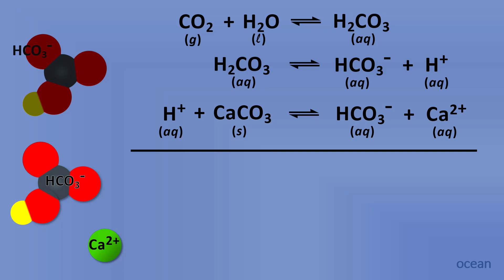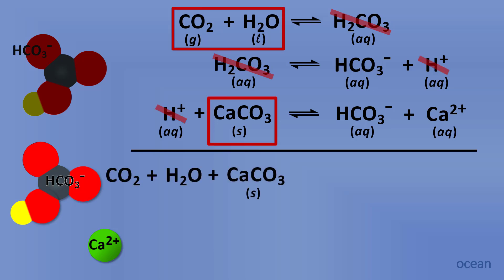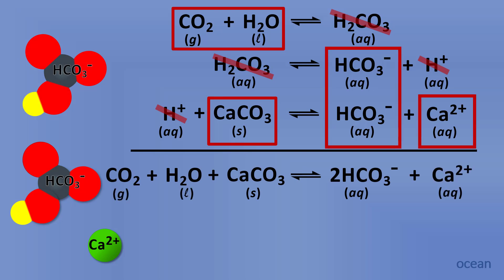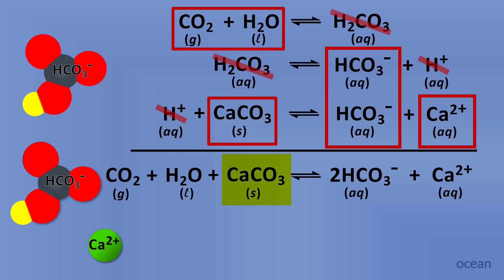What we can do with these three reactions is add them up to get an overall reaction — the same way you would add mathematical equations, crossing out whatever is the same on both sides. The reactants are carbon dioxide, water, and calcium carbonate; the products on the right are HCO₃⁻ hydrogen carbonate and calcium ions. This presents a huge problem for many, many organisms in the ocean, as they lose their calcium carbonate skeleton and cannot live without it.